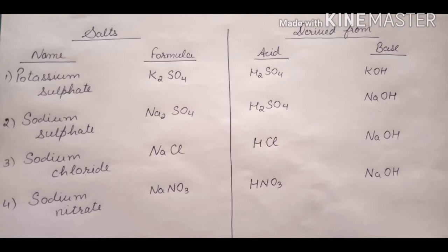Similarly, in sodium sulfate, sodium is obtained from the base sodium hydroxide and sulfate is obtained from the acid sulfuric acid. Sodium chloride is obtained from neutralizing hydrochloric acid and sodium hydroxide base. Sodium nitrate is obtained from neutralizing nitric acid and sodium hydroxide base. Now try finding out the acids and bases used to obtain the rest of the salts.